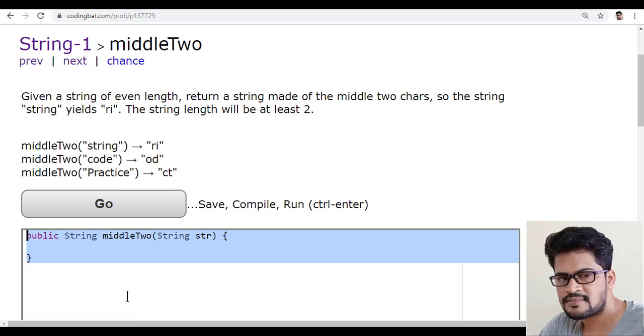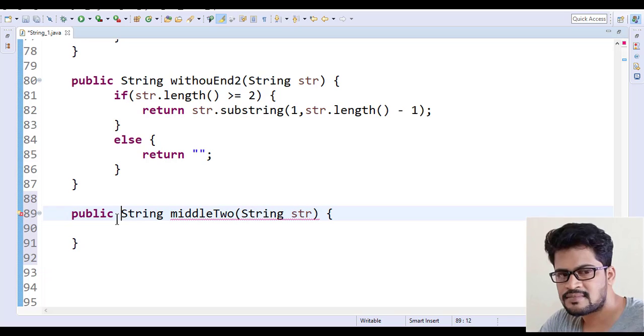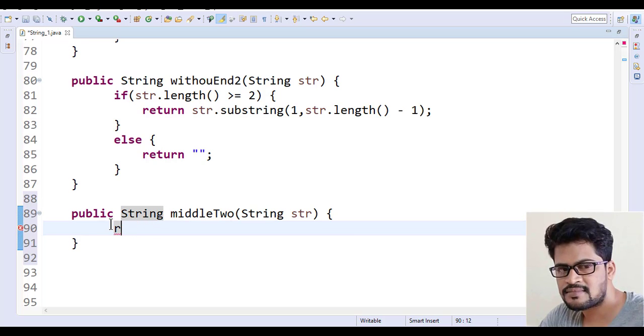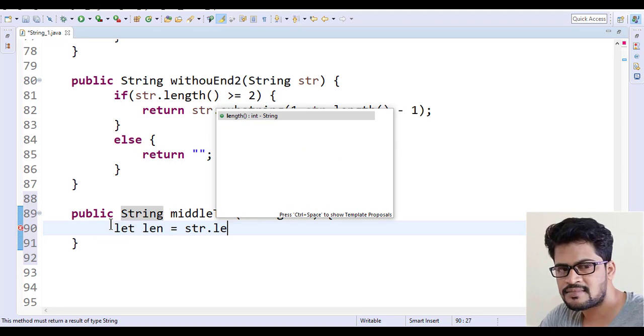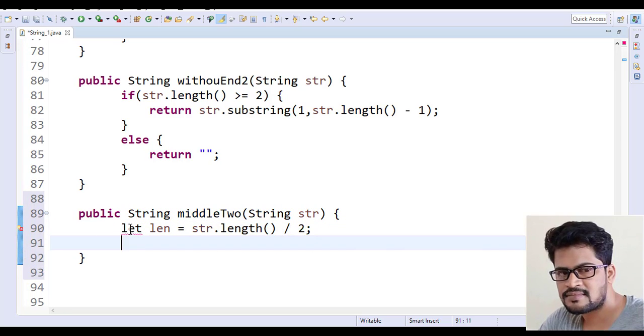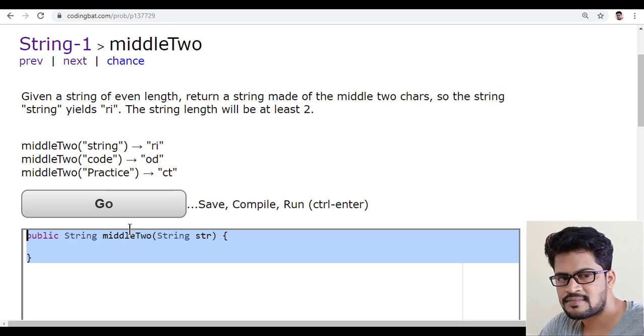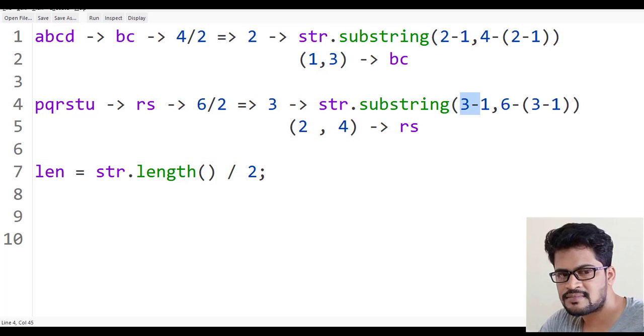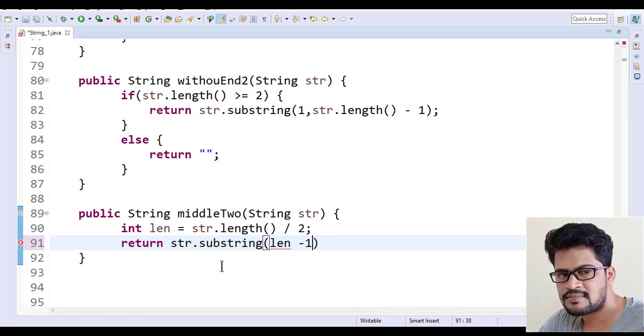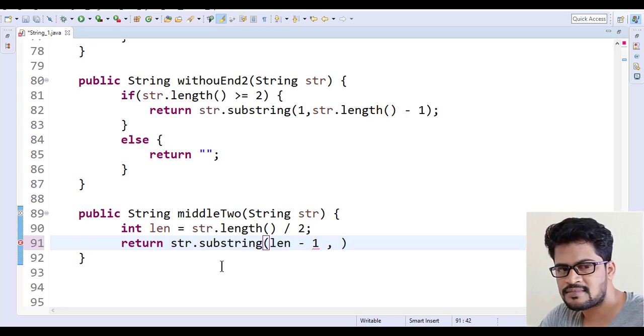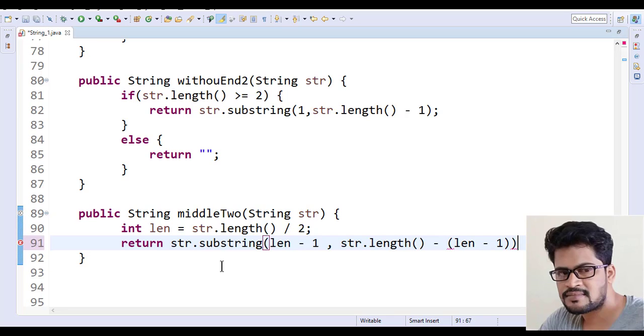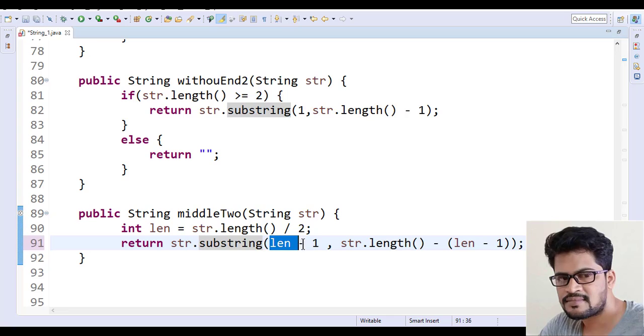I got it. Now let me just copy this. Go to here, and let me paste it. So now here, middle two characters. You can simply return. Let length equal str.length by 2. And then, sorry, it's not let, it is int here. Now return str.substring of len minus 1, len minus 1 comma, str.length minus len minus 1. This is what we have discussed.